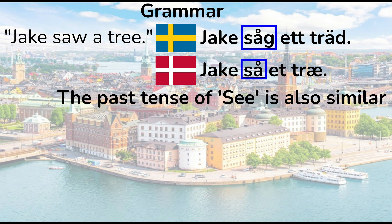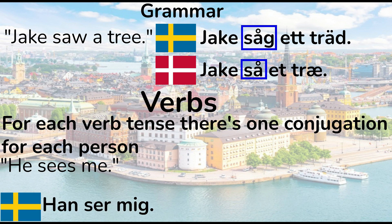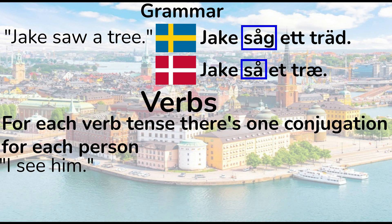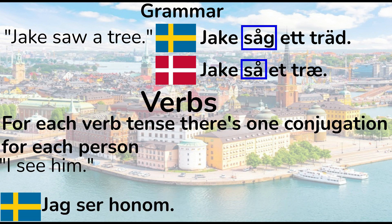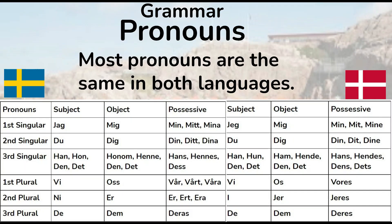Also, the past tense of 'see' is similar in both languages. Which brings us to verbs. For each verb tense, there's only one conjugation for each person. For example, to say 'he sees me' in Swedish and in Danish, and to say 'I see him', the conjugation remains the same regardless of person.